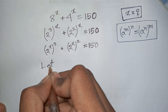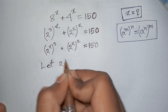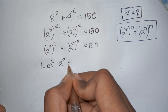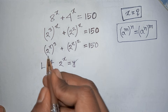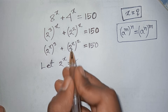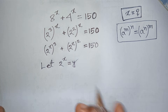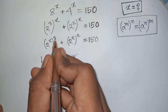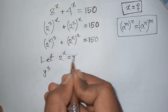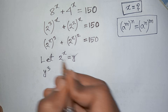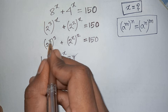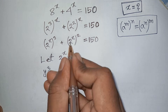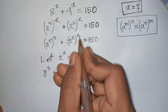Now let 2^x be substituted by y. Both terms contain 2^x, so letting 2^x = y, the equation becomes y³ plus y².